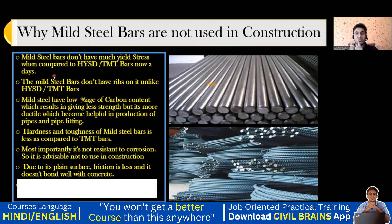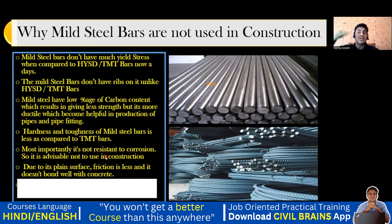To quickly recap why mild steel is not used: first, they don't have much yield stress compared to HYSD and TMT bars. Second — very important — they are not resistant to corrosion. Third, since they have a plain surface with no ribs, there won't be good friction and there won't be good bonding between the concrete and the rebar. Three points — if you can tell these it is well and good.